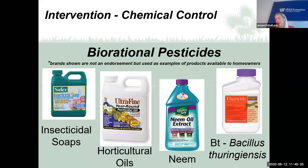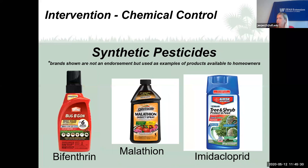Synthetic biorational pesticides are also low-toxicity but not considered organic. Examples include bifenthrin, malathion, and imidacloprid. Always read the label to make sure you're using them on the right plants — malathion can be used on vegetable crops, while some formulas of imidacloprid are only for landscape plants, not vegetables. Bifenthrin, malathion, and imidacloprid used as contact killers; imidacloprid is also a systemic, meaning it goes into the plant's system and kills insects as they feed.